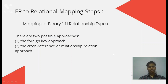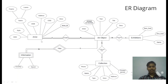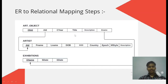In EER-to-relational mapping steps for binary 1:N relationship types, there are two possible approaches: the foreign key approach and the cross-reference or relationship-relation approach. We have artist–art object as a 1:N relationship, and art object–exhibition as many-to-many, and art object–collection. We included artist ID as a foreign key in the art object table because art object is on the N side. Similarly for exhibition, we included E-name because it is also on the N side.